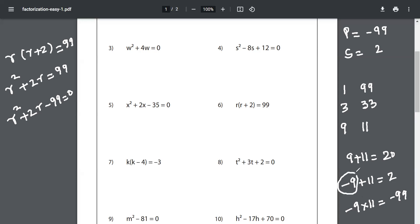Now let me write this. How will I write this? r² + 11r - 9r - 99 = 0.